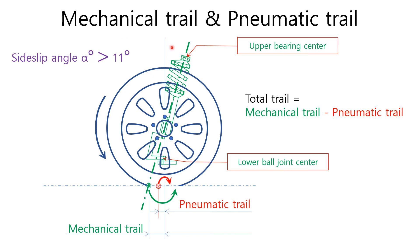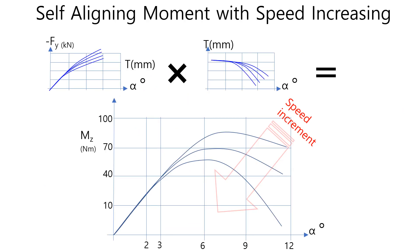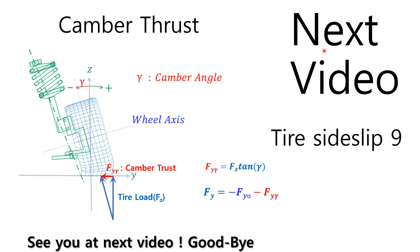If you watched the previous videos, you can easily understand the upcoming videos. I explained the mechanical trail and pneumatic trail and their interaction. Recently, I explained the effect of vehicle speed on pneumatic trail and the self-aligning moment. The next video will be tire side slip part 9, where I will explain camber thrust. You can catch the brand new video by free subscription. So, what are you waiting for? See you in the next video. Goodbye, guys!